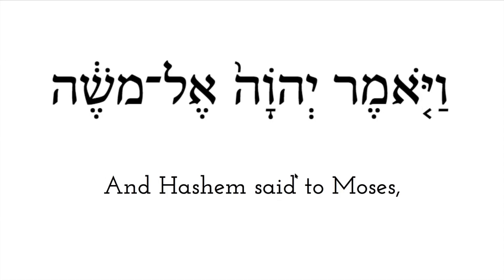Va-yo-mer. And this is yod-he-vav-he, the sacred name. We don't pronounce it, but we do say Adonai, which means 'the Lord.' Here I have Hashem, which means 'the name.' Hashem literally means 'the name,' and it's referring to the sacred name, the Tetragrammaton.